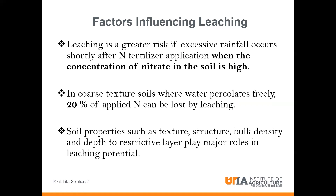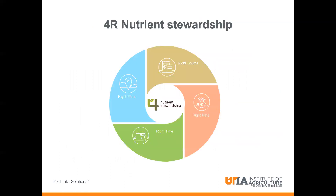Now switching gears, I want to talk about the 4R nutrient stewardship principles. This was developed by IPNI and the International Plant Nutrition Institute. The goal is that when you adopt certain practices in the 4R — doing things the right way — you can improve nutrient use efficiency. This principle is adopted all over the world, and you can tailor it to your farming operation. It's not only restricted to nitrogen but to other nutrients as well. I'll walk you through the 4Rs as they pertain to Tennessee.